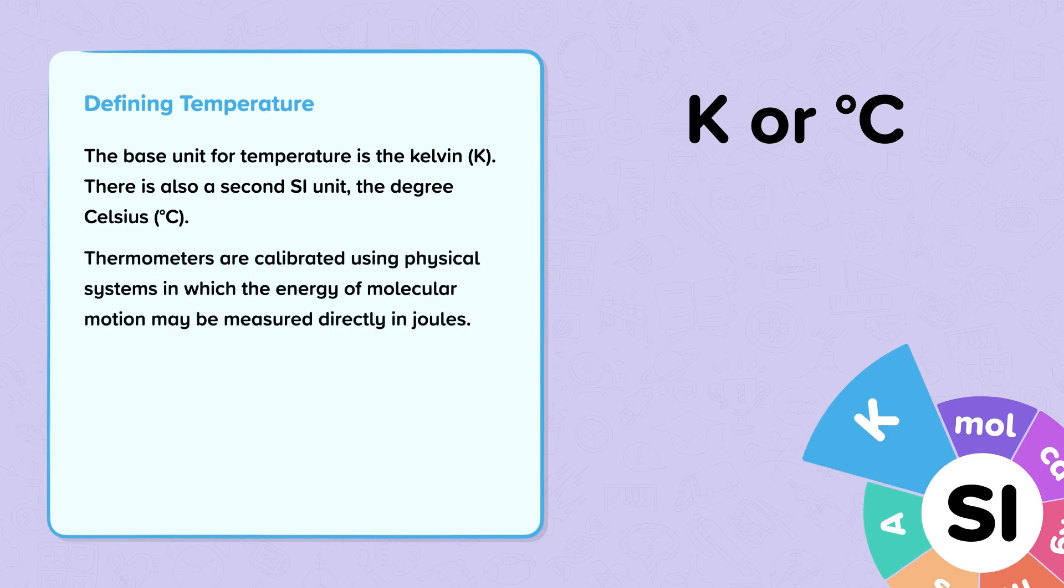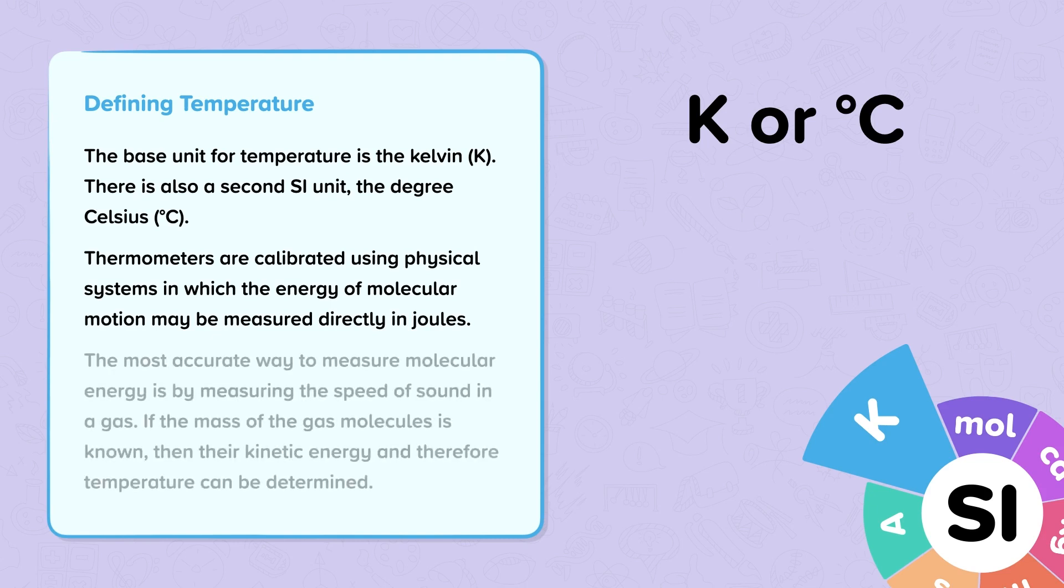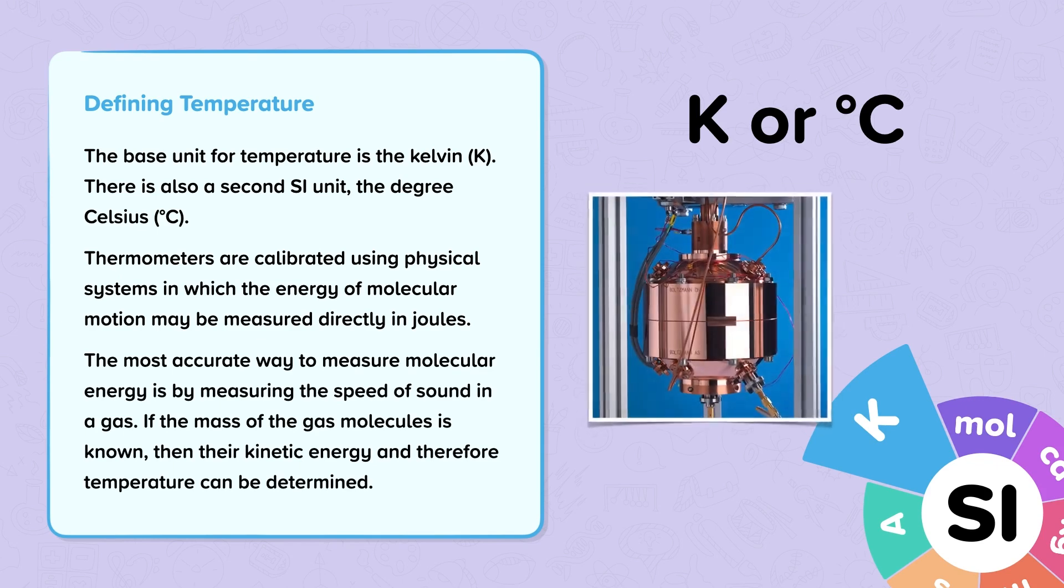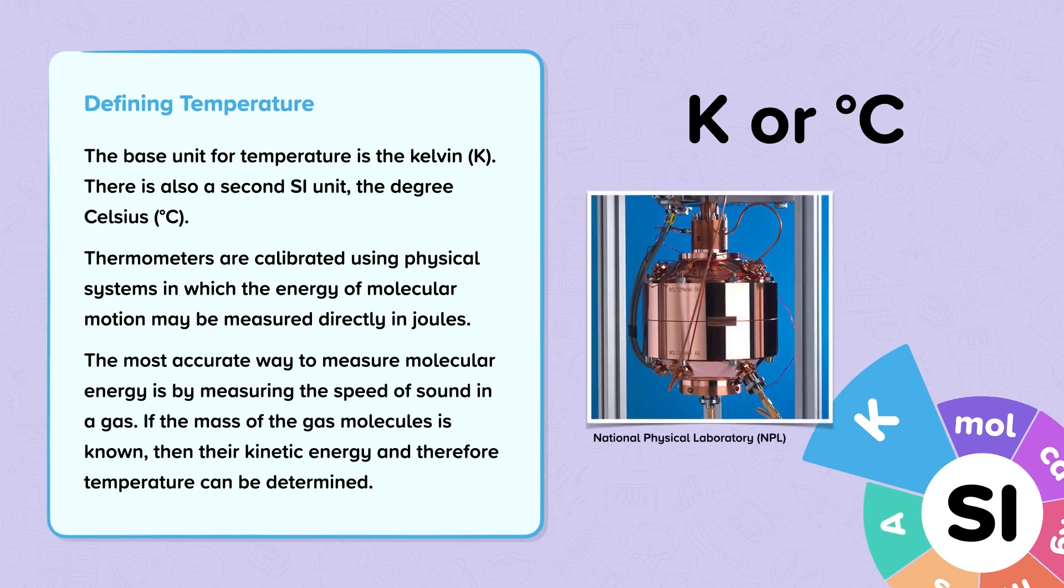Thermometers are calibrated using physical systems in which the energy of molecular motion may be measured directly in joules. The most accurate way to measure molecular energy is by measuring the speed of sound in a gas. If the mass of the gas molecules is known, then their kinetic energy, and therefore temperature, can be determined.